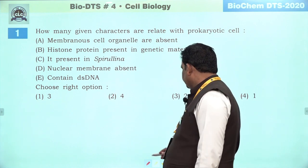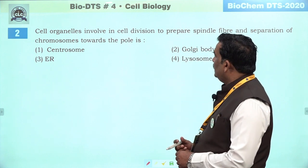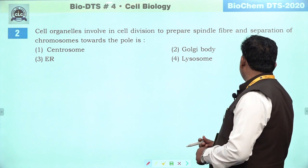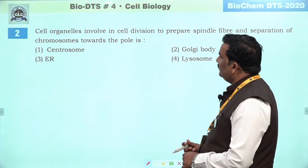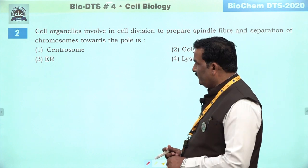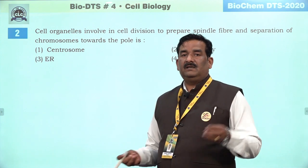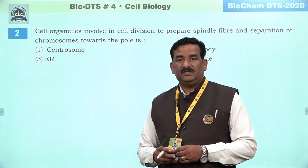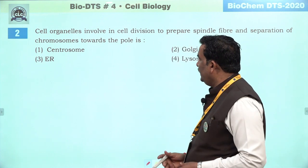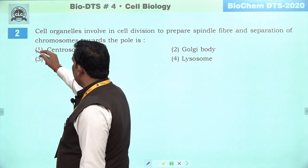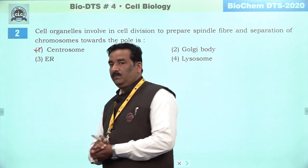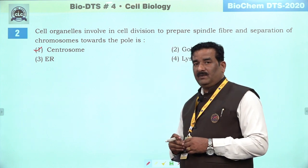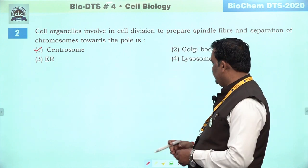Next question: cell organelles involved in cell division — to prepare spindle fiber and separation of chromosome towards the pole. Chromosome ka poles ki or movement through the spindle fiber hota hai. Spindle fiber formation ke liye responsible jo cell organelle hai, woh centrosome maana gaya hai. Kyunki dono centriole poles par pahunchte hain, aur in mein spindle fiber ka formation hota hai, jisse chromosome separate hota hai.